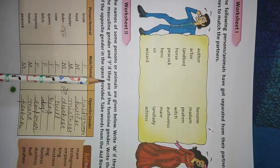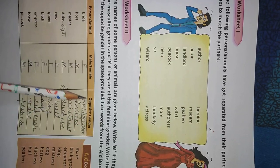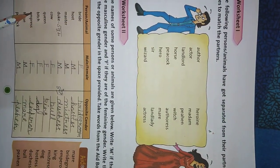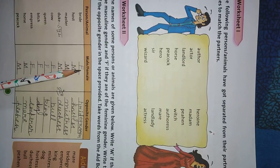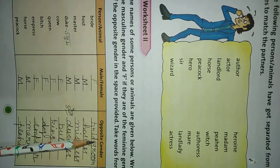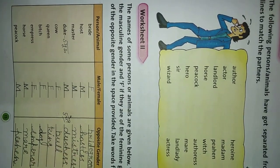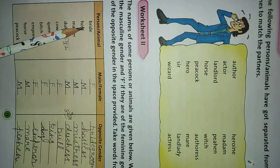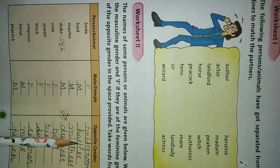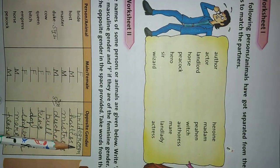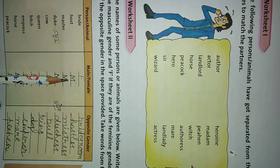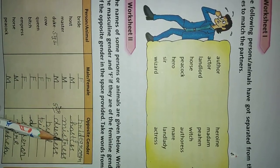The names of some persons or animals are given below. In the first column, the names of persons or animals are given. You have to write male or female in the second column, and in the third column you have to write the opposite gender. The first one is Bride — it is female, and its opposite gender is Bridegroom. The second is Host — it is male, and the opposite gender is Hostess.